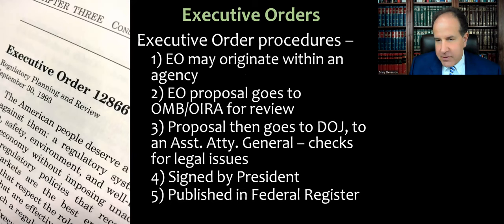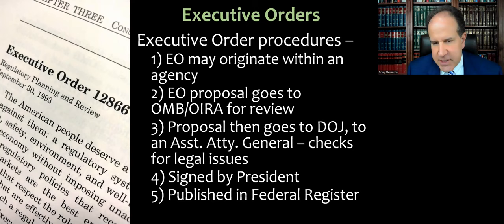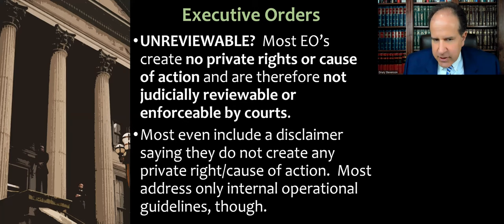Just by way of procedures — this is not emphasized that heavily in administrative law or leg-reg courses — keep in mind that an executive order can come from anywhere in the executive branch: from the president himself, his staff, the Office of White House Counsel, cabinet members, or even within an agency. They will go to the OMB or OIRA for review, and then the proposal will typically go to the Department of Justice and be assigned to an assistant attorney general who will write a memo checking for legal issues and constitutional concerns. Assuming it's all approved, it will be signed by the president and published in the Federal Register. Are they reviewable? Not really, not most of the time.